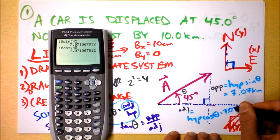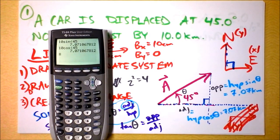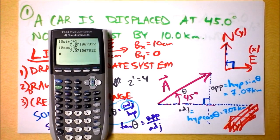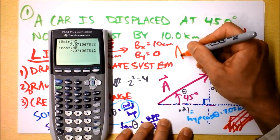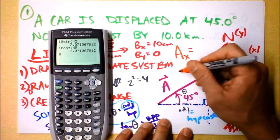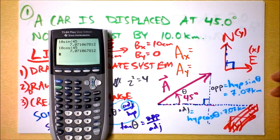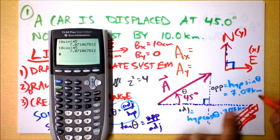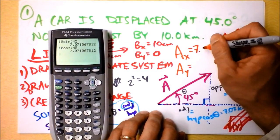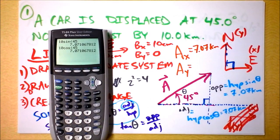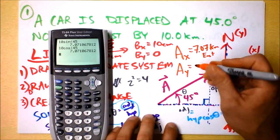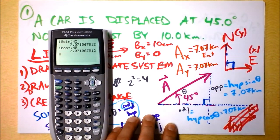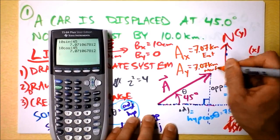This is supposed to also be 7.07 kilometers — that makes sense because it's a 45-45-90 triangle. So for vector A: A sub x equals 7.07 kilometers east, and A sub y equals 7.07 kilometers north. Let's move on to the next problem.